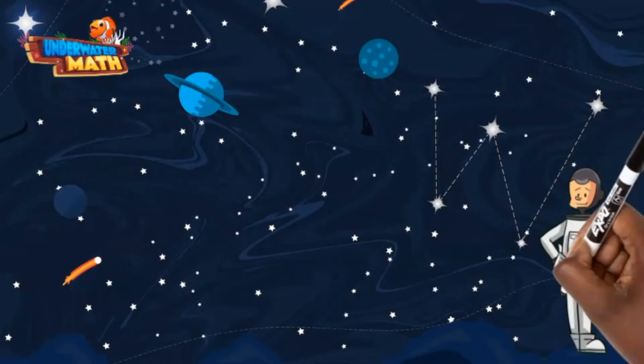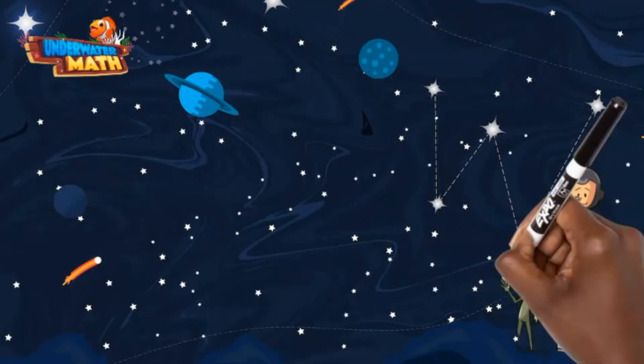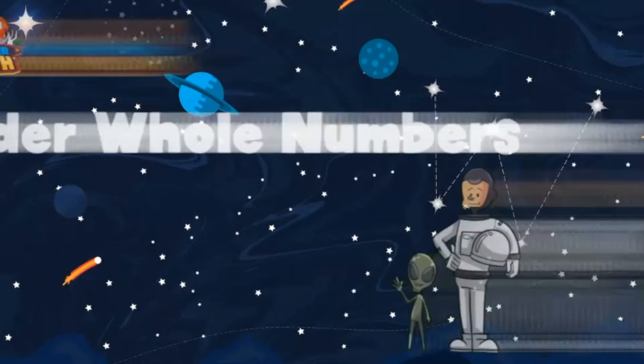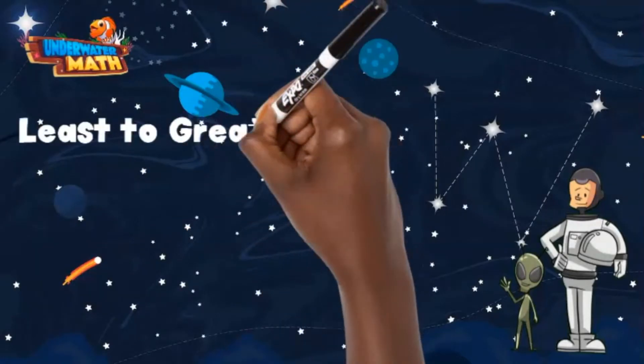Welcome back space kids, I'm Astronaut Steve and this is my alien friend Lenny. Today we are learning how to order whole numbers up here in space. When ordering whole numbers, you might see phrases such as least to greatest and greatest to least.